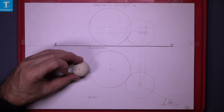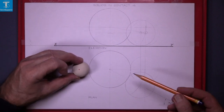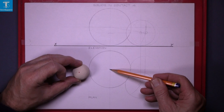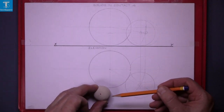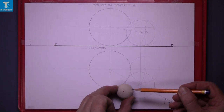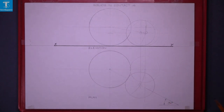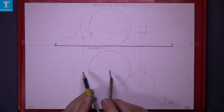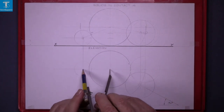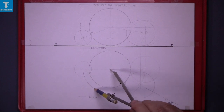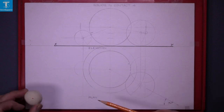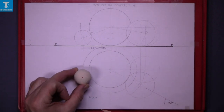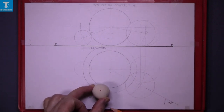Project it down and get the plan of it in this place, and then using the center of the large sphere as radius, rotate the small sphere around. Rotate the small sphere around — that line there is the path traced by the center of the small sphere as it revolves.